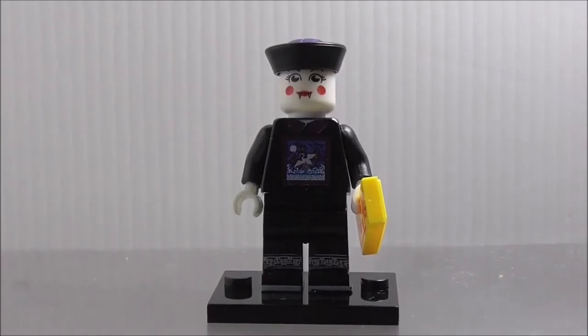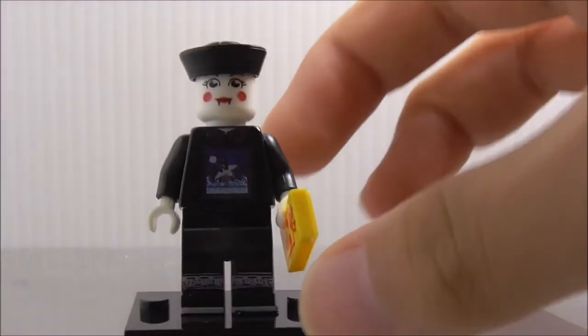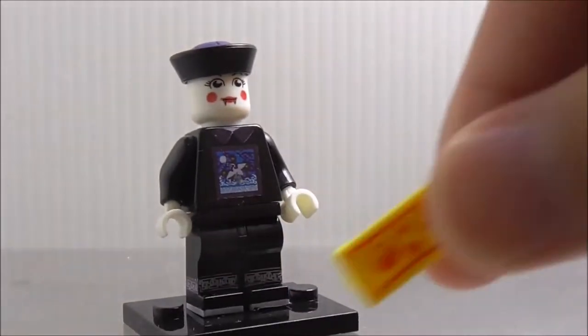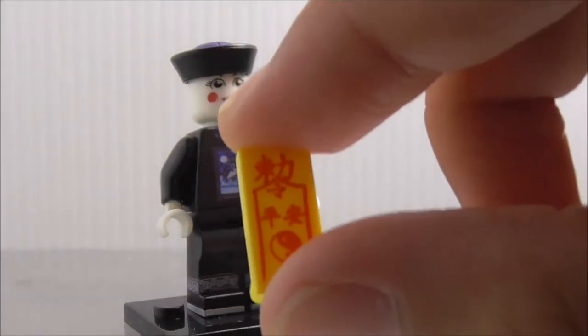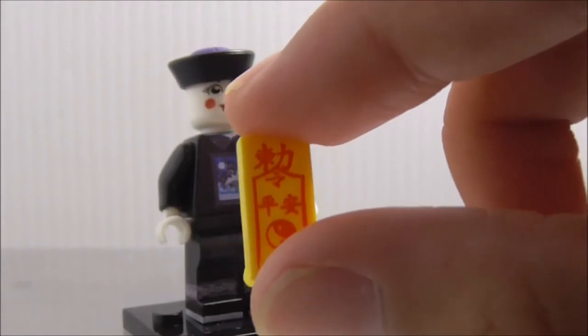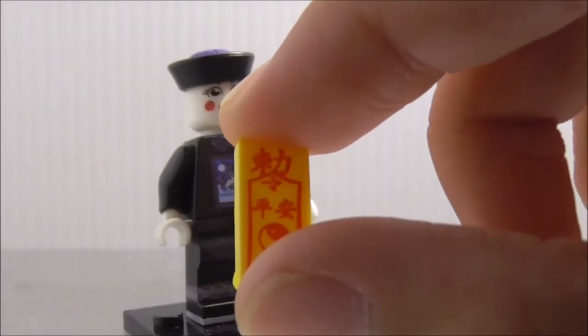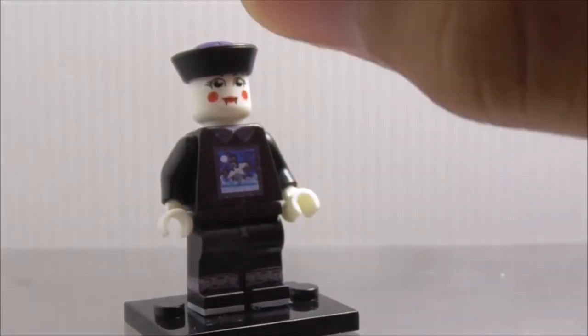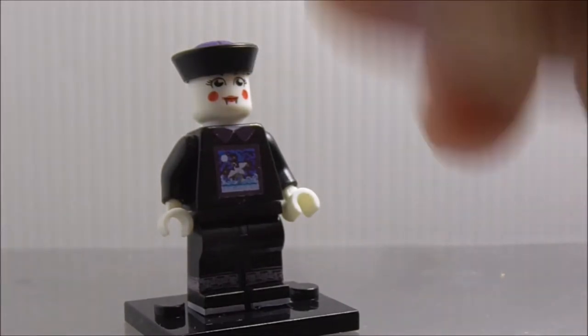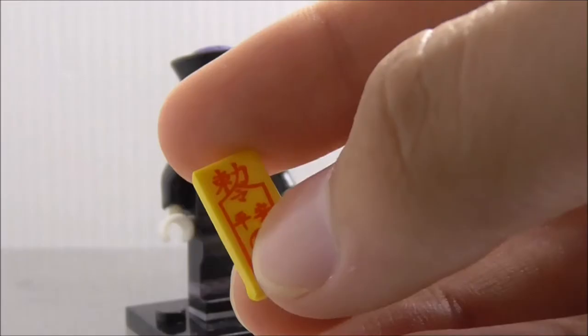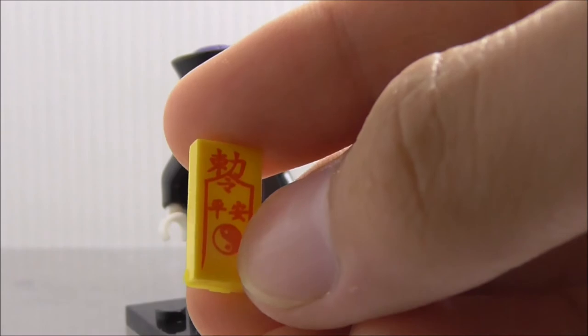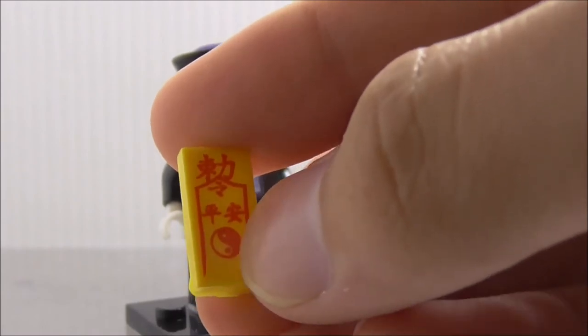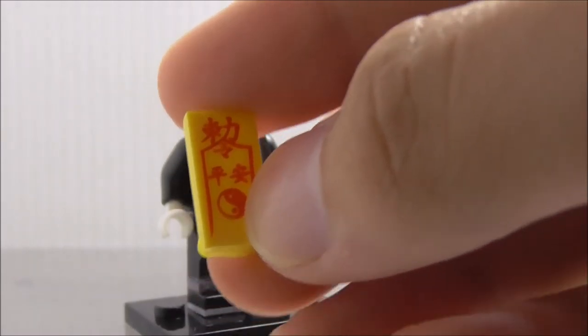The figure is holding this 1x2 tile piece which is printed. This is a paper talisman and you have a spell on it which I guess stops the vampire. You have the symbol on this one which I forgot the name of but I know what it is.